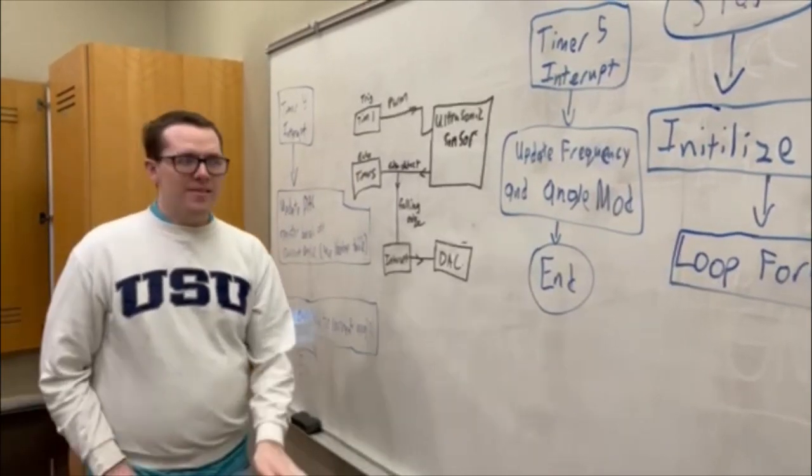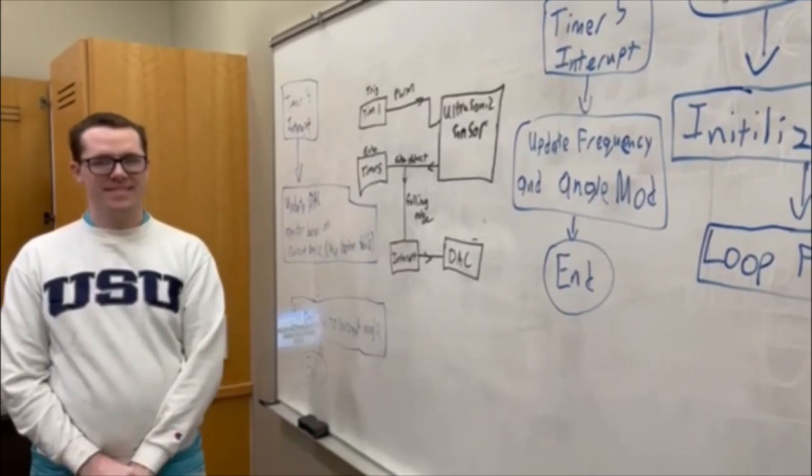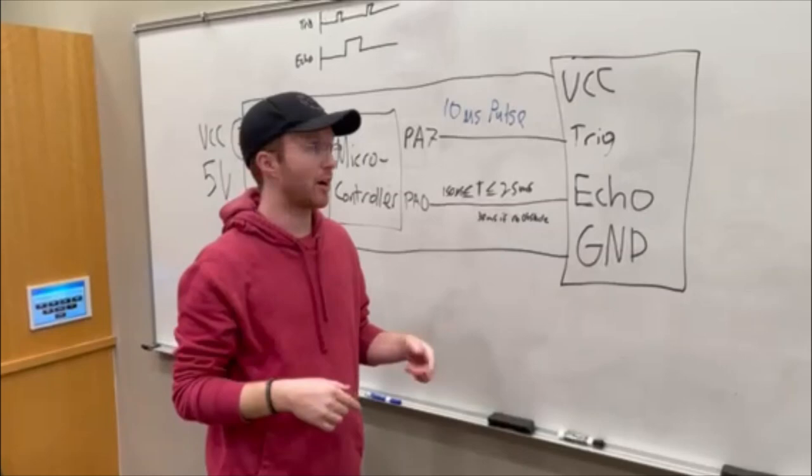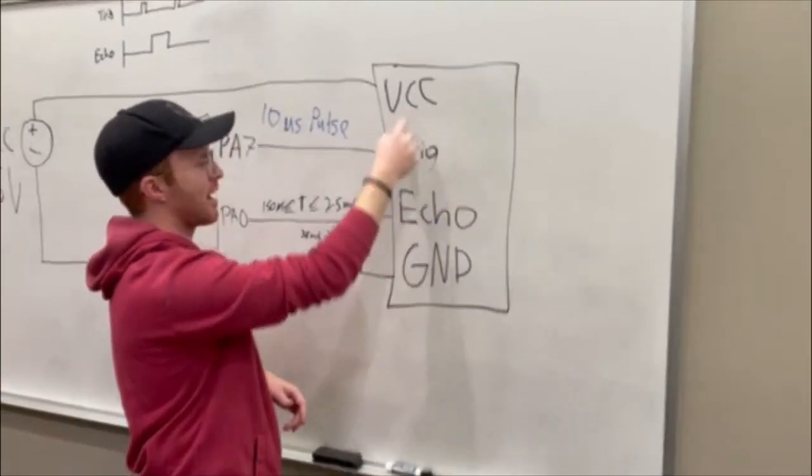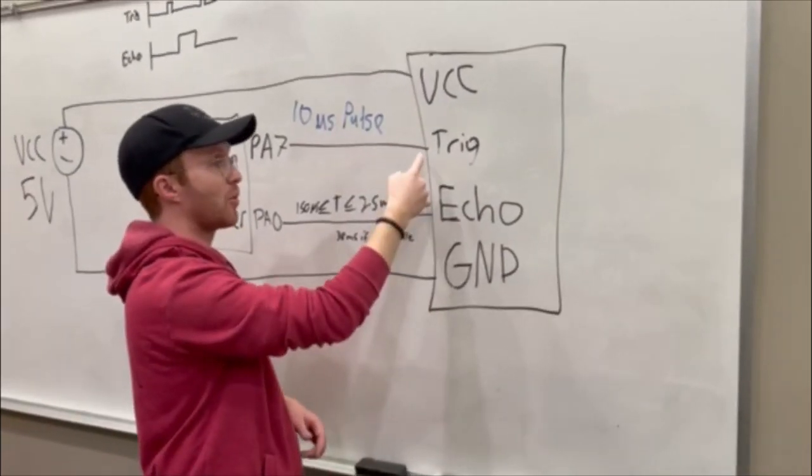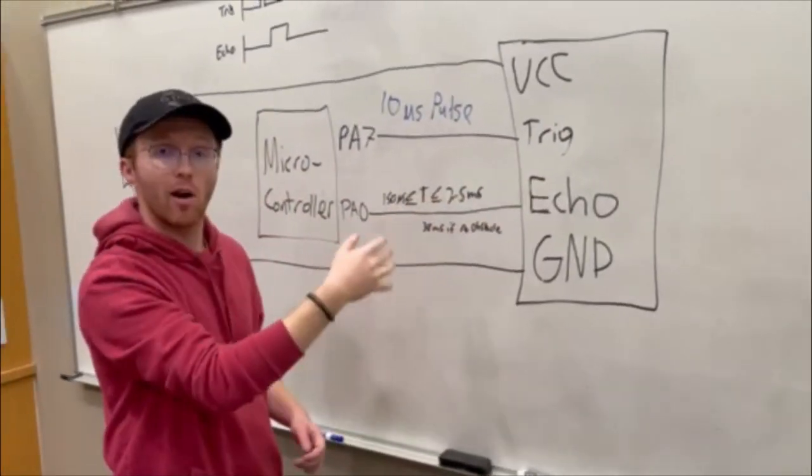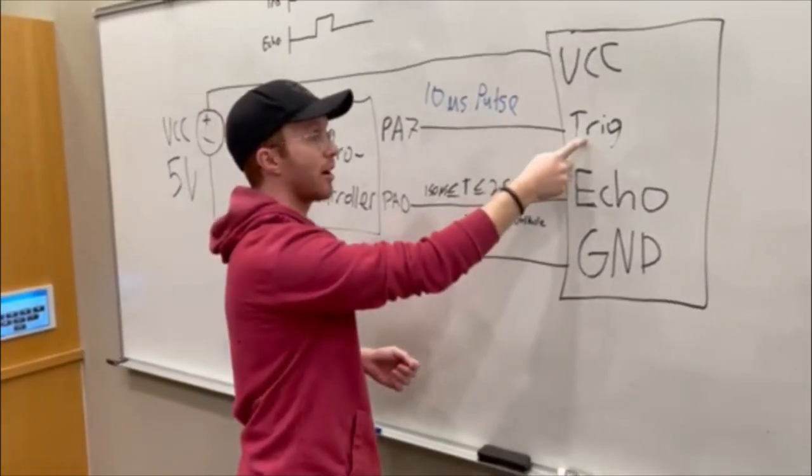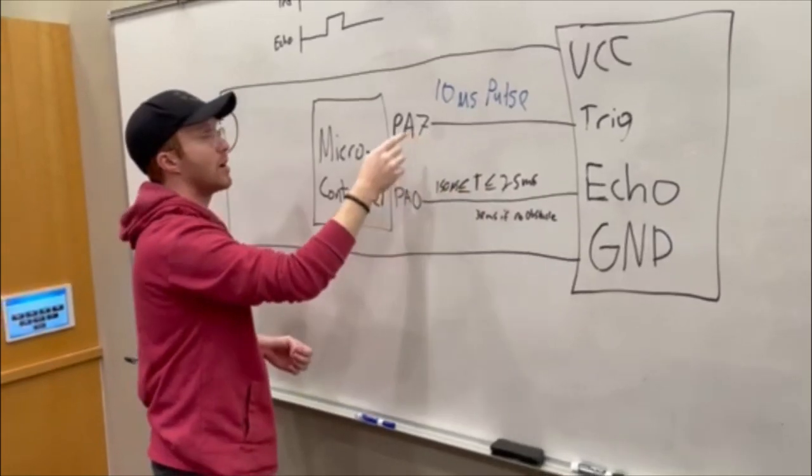This is an explanation of how the ultrasonic sensor works on our microcontroller. The ultrasonic sensor has four ports: power, ground, trigger, and echo. It works like how a bat uses echolocation—the trigger sends out an ultrasonic sound to hit an object.